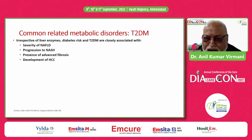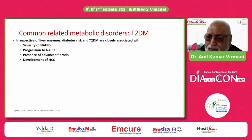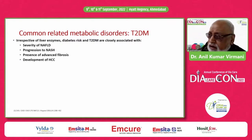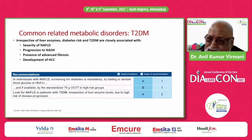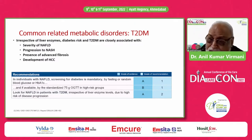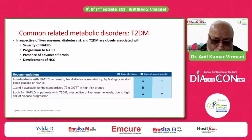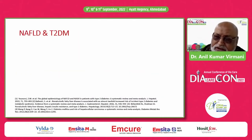Irrespective of liver enzymes, diabetes risk and type 2 diabetes are closely associated with the severity of non-alcoholic fatty liver disease, progression to hepatitis, presence of advanced fibrosis, and development of hepatocellular carcinoma. In individuals with non-alcoholic fatty liver disease, screening for diabetes is mandatory — either by fasting or random blood glucose or HbA1c, or if available, the standardized 75-gram OGTT in high-risk groups. We must look for NAFLD in patients with type 2 diabetes, irrespective of liver enzyme levels, due to the high risk of disease progression.